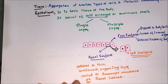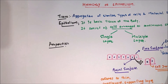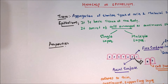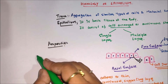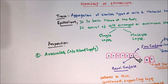So this is the general structure of the epithelium. Now let us discuss the properties of the epithelium. The first property is that it is avascular, which means it does not have any direct blood supply. It receives nutrition from capillaries which are present in the basement membrane.